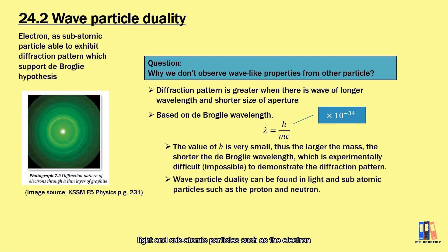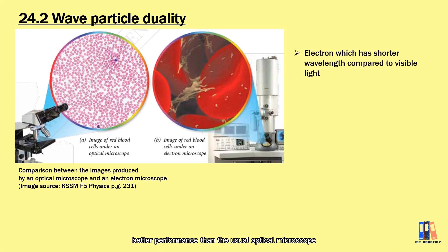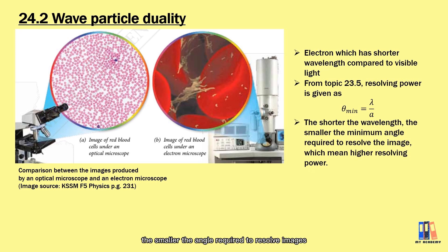In conclusion, light and the sub-atomic particles such as the electron, proton and neutron which has very low mass are able to demonstrate the wave particle duality. Lastly, we shall talk about the electron microscope which is invented after the wave particle duality is proven. It has better performance than the usual optical microscope because the electron has shorter wavelength than the visible light. According to the resolving power, the shorter the wavelength, the smaller the angle required to resolve images and this gives us higher resolving power. So here you can see the electron microscope able to give a sharper image on the red blood cell compared to the normal optical microscope.